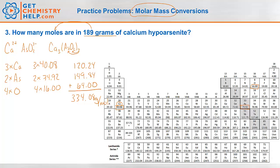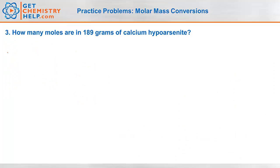So again, we can convert between grams and mole using this. So our question says, how many moles are in 189 grams? Okay. Well, we just found the molar mass. That's our conversion factor. And it was 334.08 grams per mole.